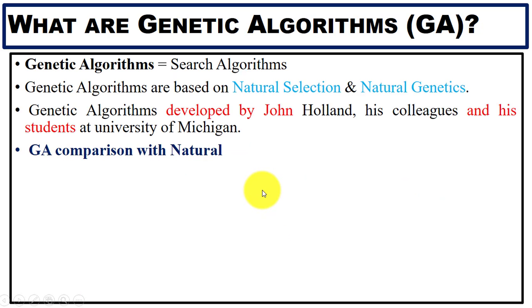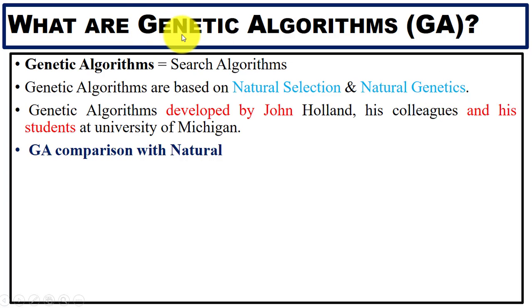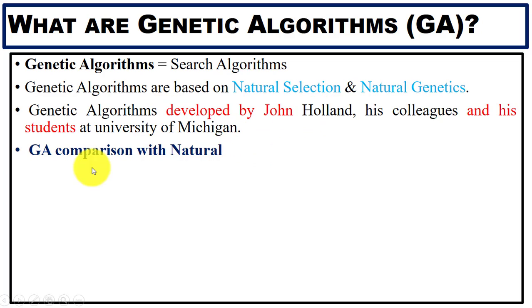First, we will see what genetic algorithms are. Genetic algorithms are search algorithms based on natural selection and natural genetics. Genetics is a branch of biology concerned with the study of genes. Here you can see the developer of the genetic algorithm.